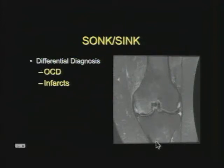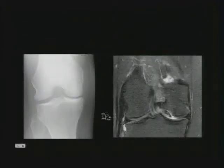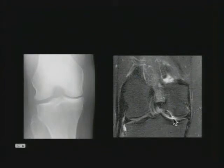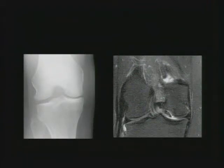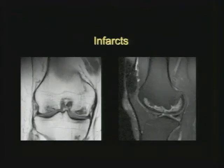You can differentiate OCD from SONK by location — osteochondritis dissecans is on the medial femoral condyle near the notch and in younger patients. On radiograph it may be hard to see, but on MR you see a fragment that looks loose with a high-signal interface with the parent bone — that is OCD. It affects the knee, ankle, and elbow. Remember: it's called dissecans, not desiccans.